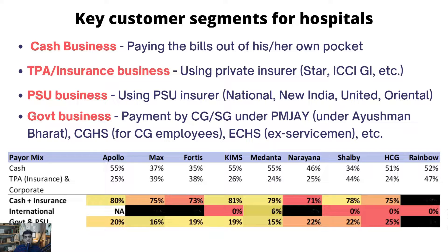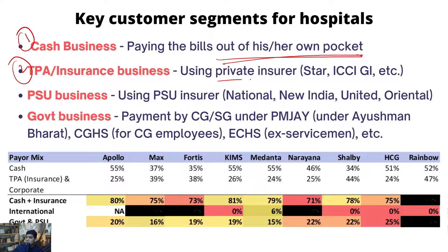When we look at the customer segments for hospitals, there are typically 5 types. The first is the cash-paying customer — someone who pays the hospital bills out of their own pocket. The second type is the third-party aggregator or insurance business, meaning private insurers. So if someone has a policy from Star Health, ICICI, or Lombard, and that hospitalization is covered under their policy, the hospital expenses are paid by the insurance company.